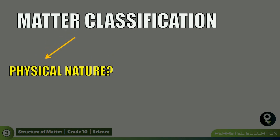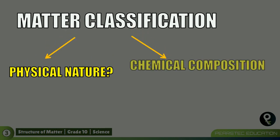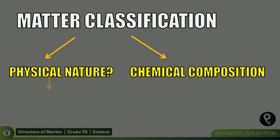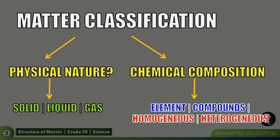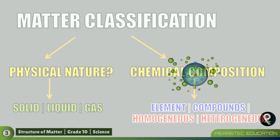Now, physical nature and chemical composition. Under the physical nature, solid, liquid, and gas. Under the chemical composition, element and compounds and homogeneous and heterogeneous. Yes. So, we have to learn something else also. What is that?